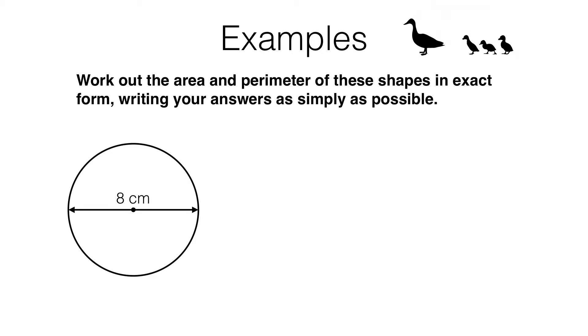We need to work out the area and perimeter of this shape. This is a circle. The formula for area of a circle is area equals pi r squared, where r is the radius.